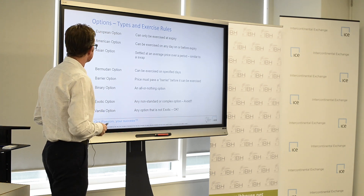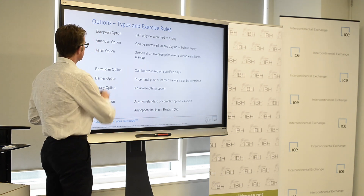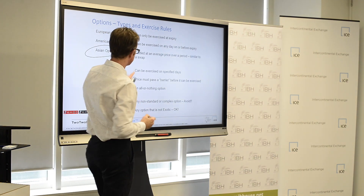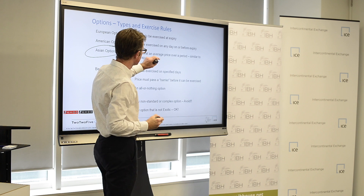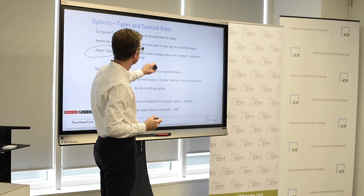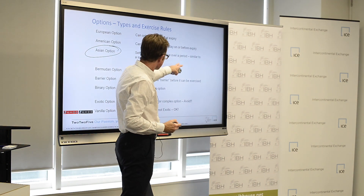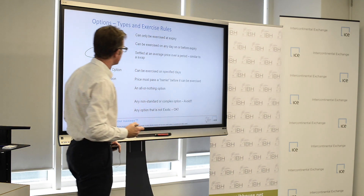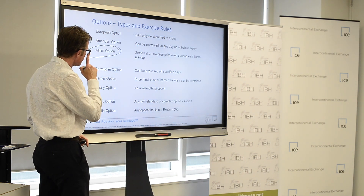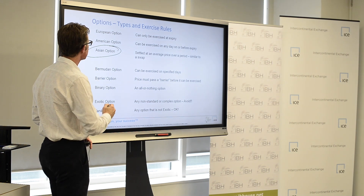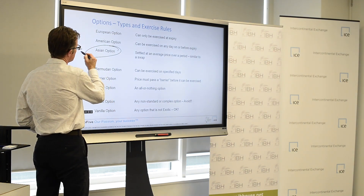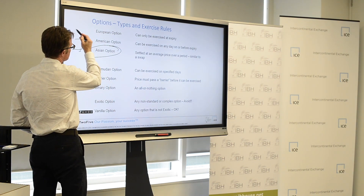There are lots of different types of options. I mentioned already the Asian option, which is actually settled not at a particular point in time, but at an average price over a period. So the three classic types of options are Asian, American and European.